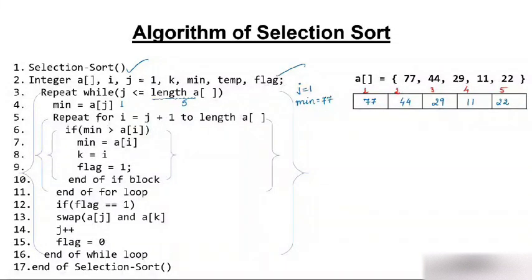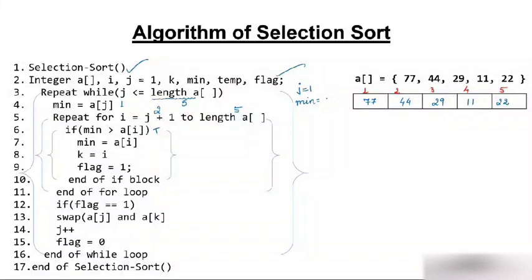We enter the for loop: i starts at j+1 = 2, going till 5. Is minimum (77) greater than a[2] (44)? Yes. So minimum becomes 44, k = i = 2, and flag = 1. We increment i to 3. Is minimum (44) greater than a[3] (29)? Yes. So minimum becomes 29, k = 3, flag = 1.